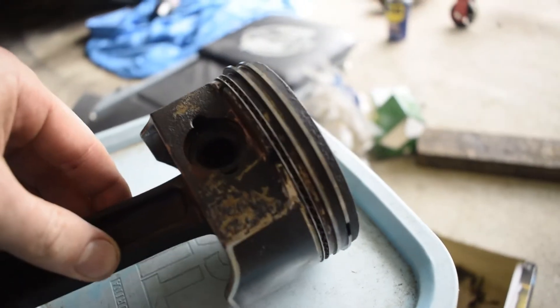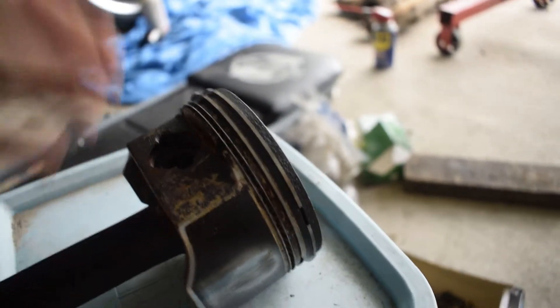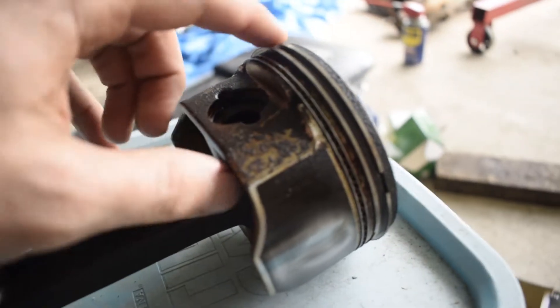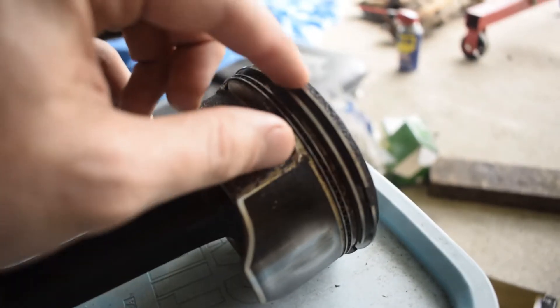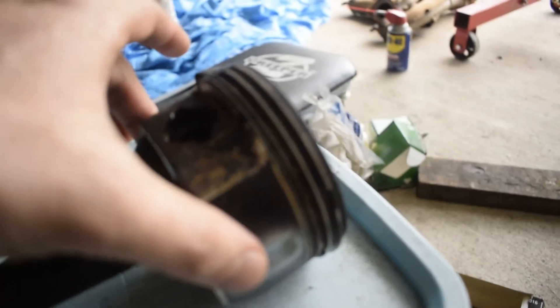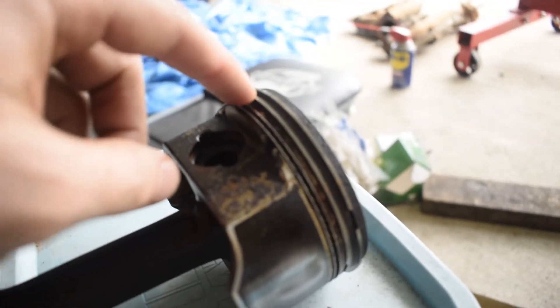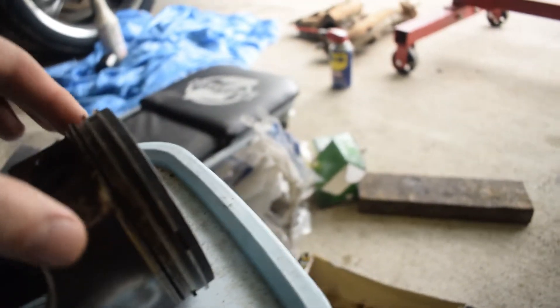So for right now I don't have a piston cup to slide the pistons in, so I'm taking off all these rings. I'm gonna replace them all anyway, so I'm just pulling all these off so it makes it a little easier to slide the piston in.